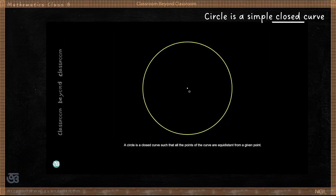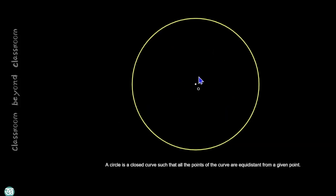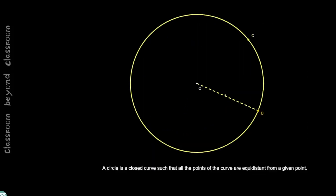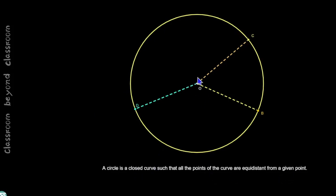What is a circle? A circle is a simple closed curve such that all the points of the curve are equidistant from a given point. This O is the given point. Points B, C, and D are all on the closed curve, and the distances OD, OB, and OC are all equal — meaning the curve is equidistant from point O.